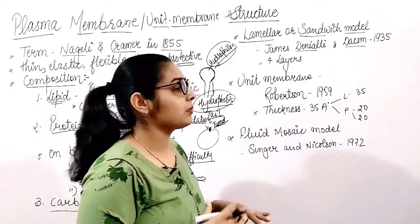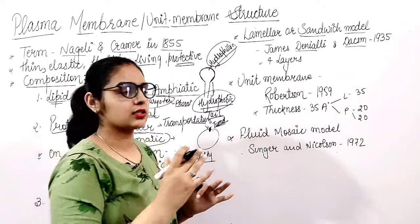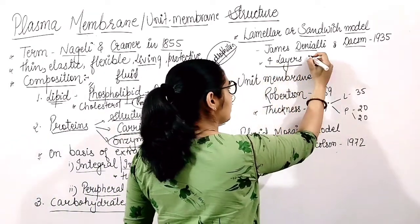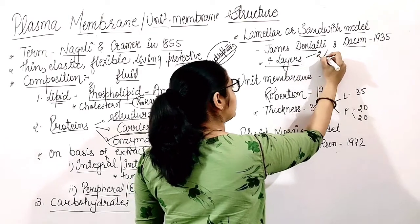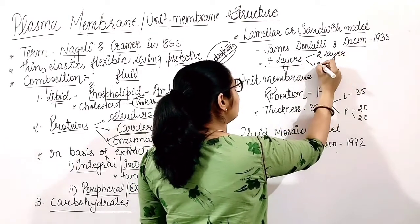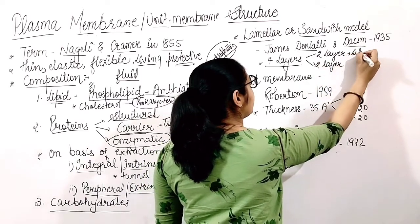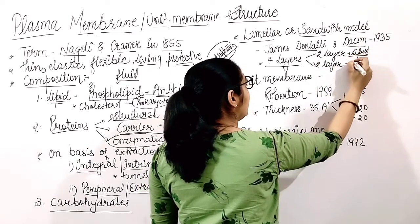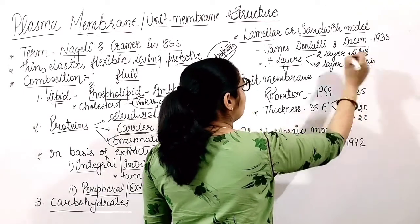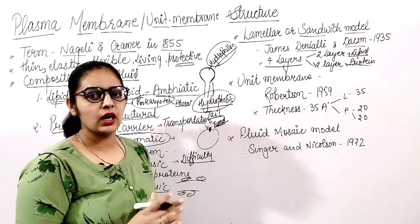They described the plasma membrane as being like a sandwich, consisting of four layers — two layers of protein and two layers of lipids, that is, a bilayer of lipids sandwiched between a bilayer of proteins. This model was later discarded.